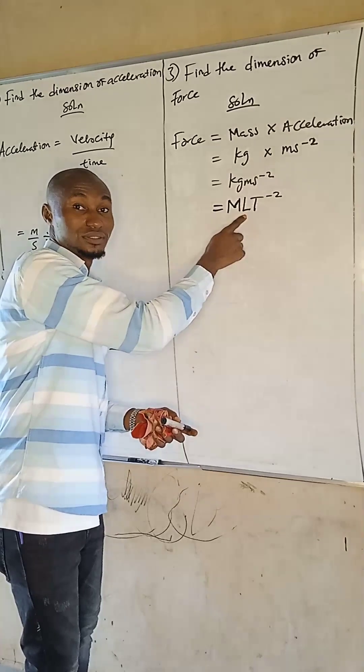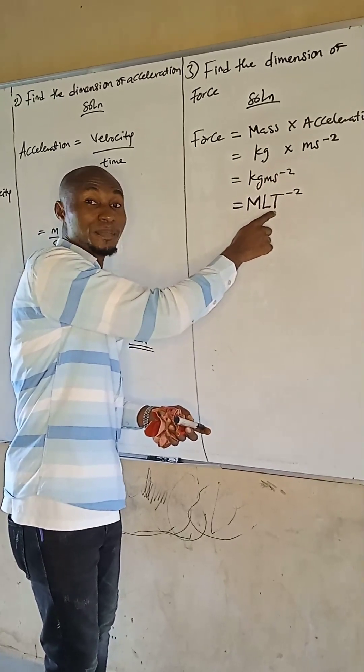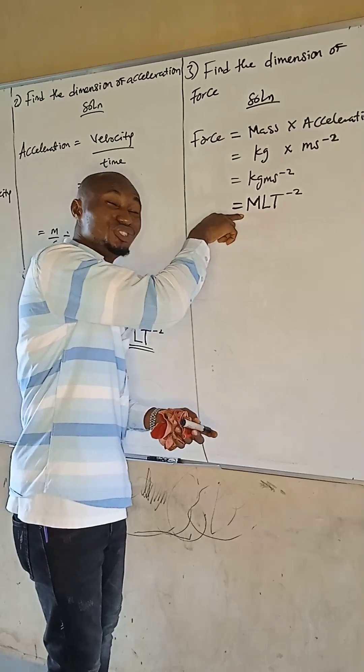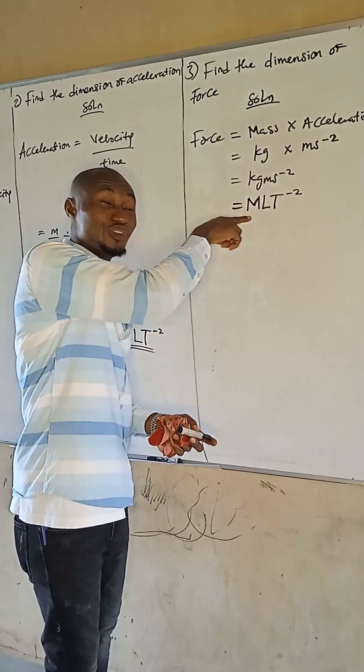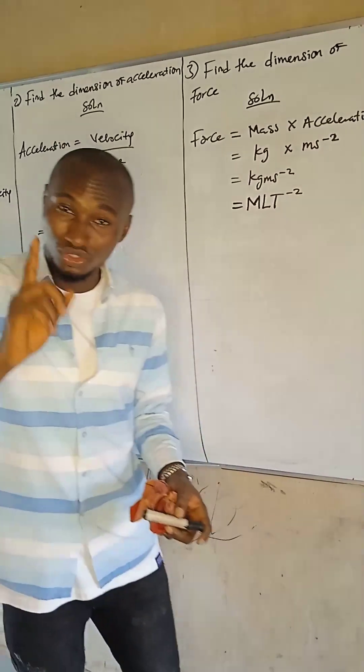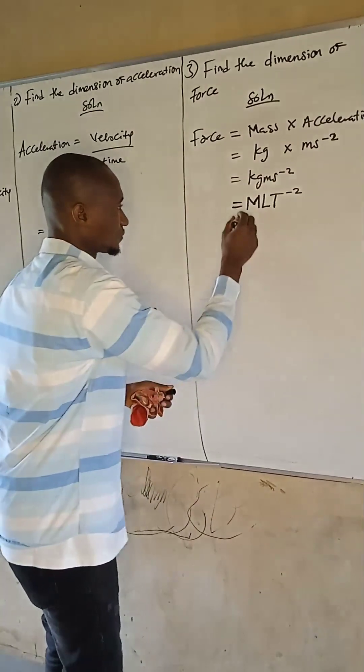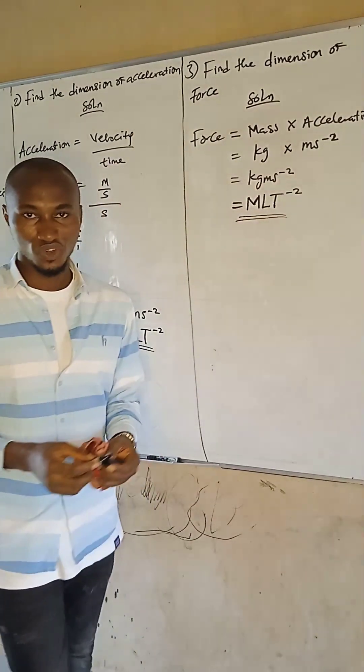Meter is the unit of length, seconds is the unit of time. And mind you, when we want to write the dimension of a particular physical quantity, we use the capital letter, the first letter of that fundamental quantity. Do you understand? So this is the dimension of force.